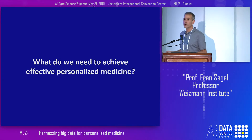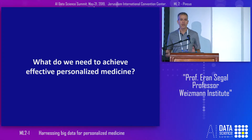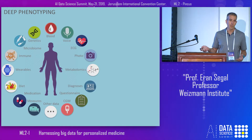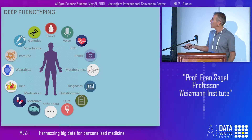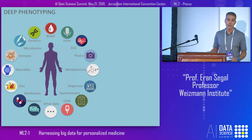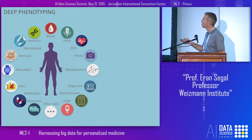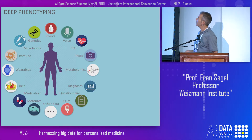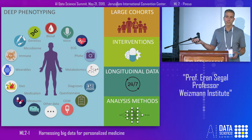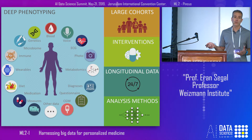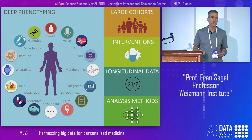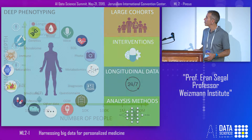What do we need in order to achieve effective personalized medicine? We probably need many different measurements from every person — as many as possible — about diet, lifestyle, medications, but also molecular data which is becoming available, like genetics, microbiome, and metabolites. We'd like to have these on large patient cohorts longitudinally, ideally in interventions so that we can infer causality, and we want advanced analysis methods to make sense of all of this data.